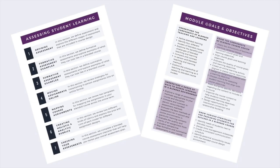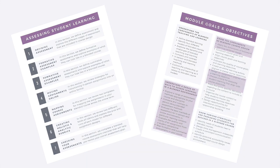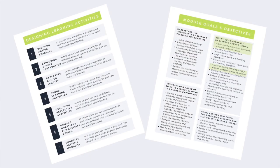In Module 3, we explore elements that contribute to designing impactful in-person and online assessments that are both engaging for students and accurate measures of blended course goals and learning objectives. Module 4 is all about active learning, and we analyze the components that lead to effective online and in-person activities.